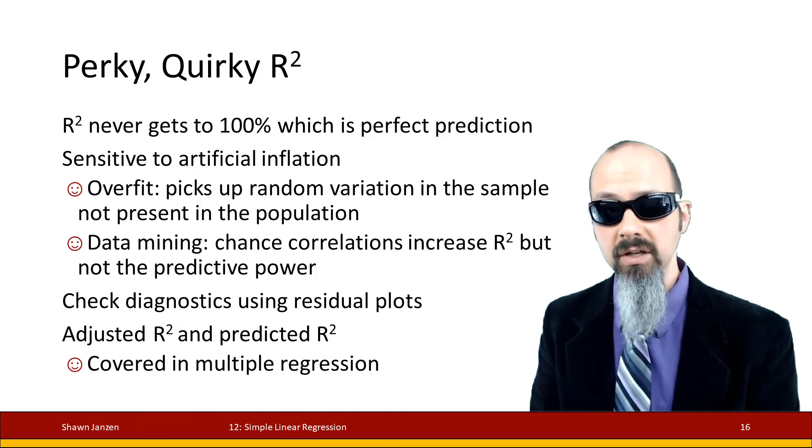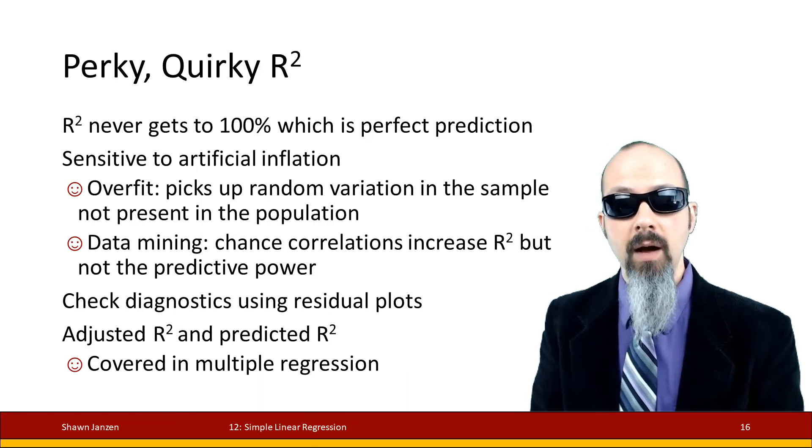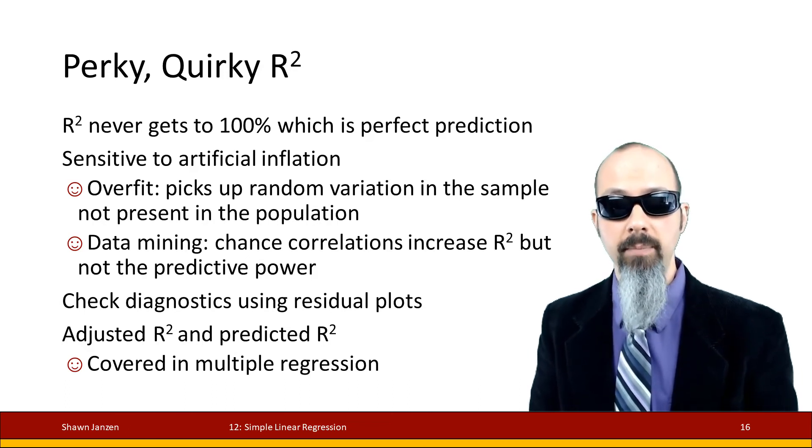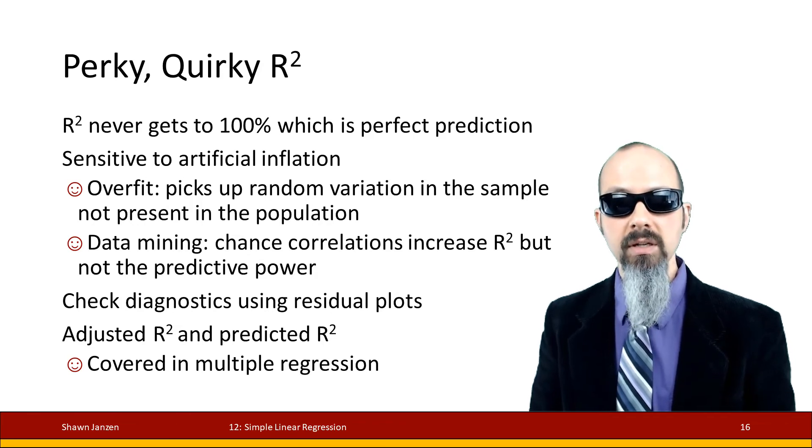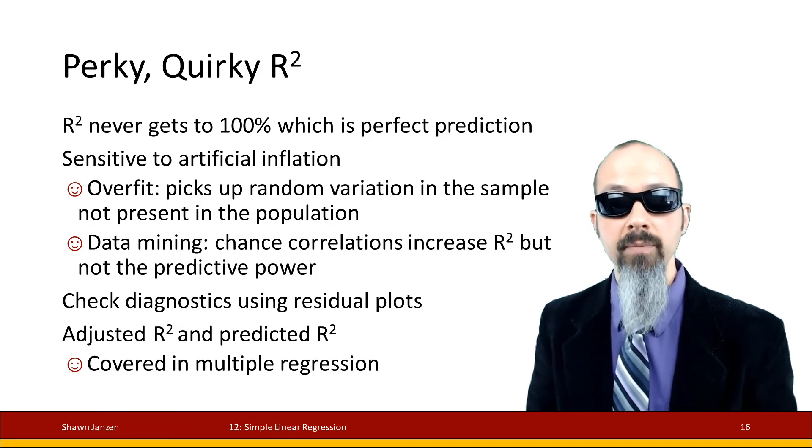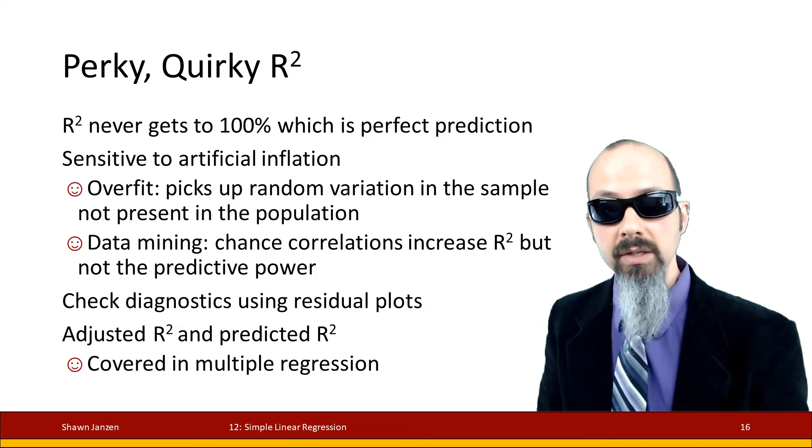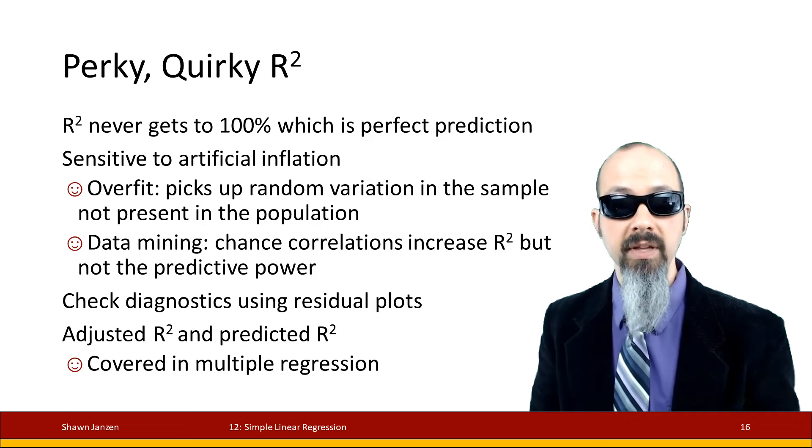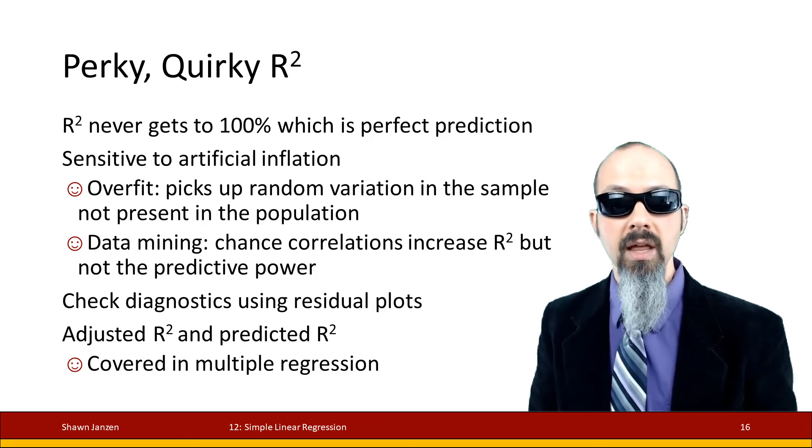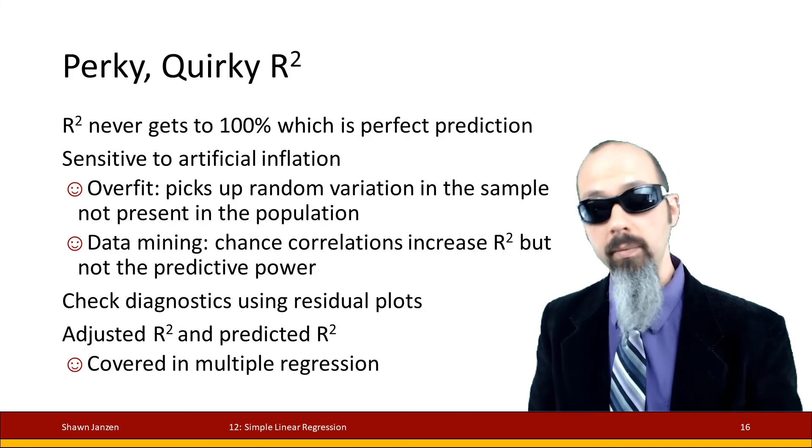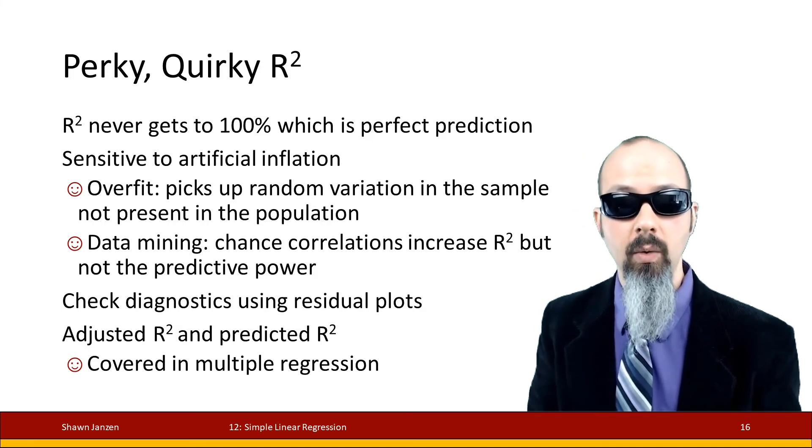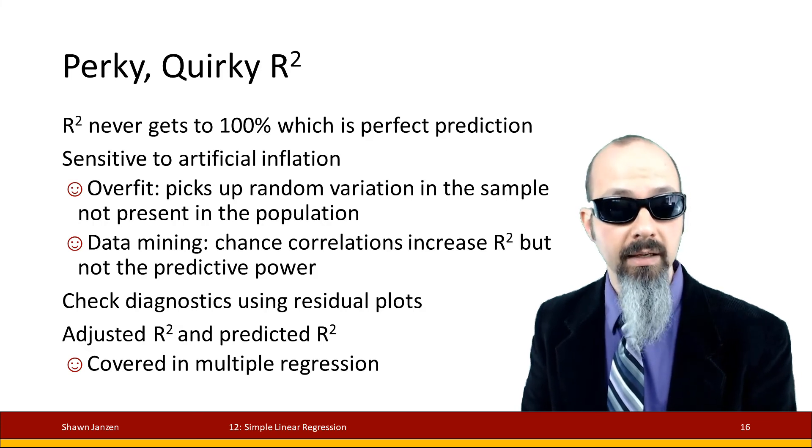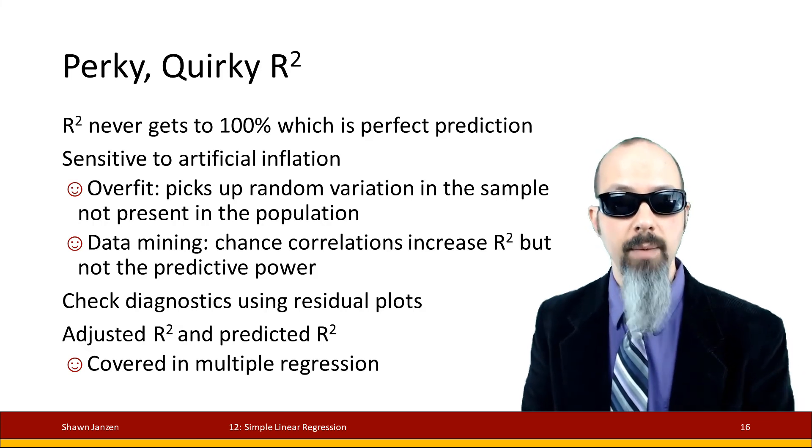If you ever hit an R² of 100%, you should certainly scratch your head. If you get anywhere near 100%, start scratching and wondering why. Mathematically, R² is sensitive to artificial inflation. We're going to definitely hit back on this when we get to multiple regression, but when you're still in simple regression, we need to keep in mind a couple things. One of them is what we call overfitting. If your data that you're using in the regression has variation in your sample that's not present in your population, that can cause R² to become higher or potentially lower, but generally we're concerned with the higher.